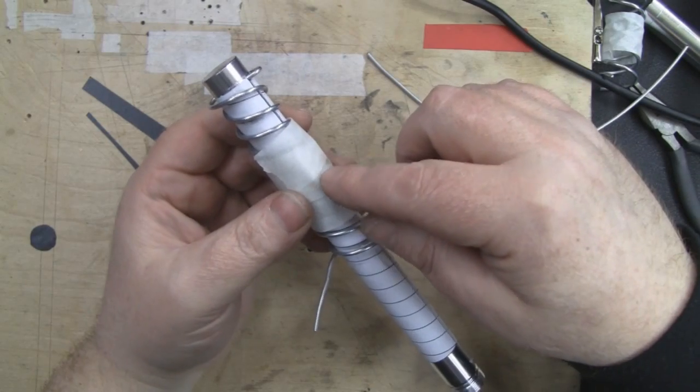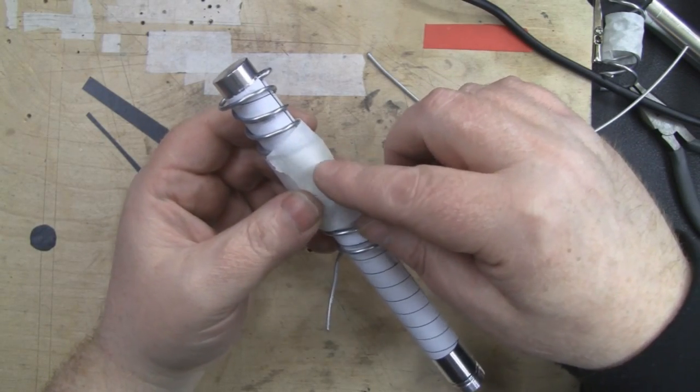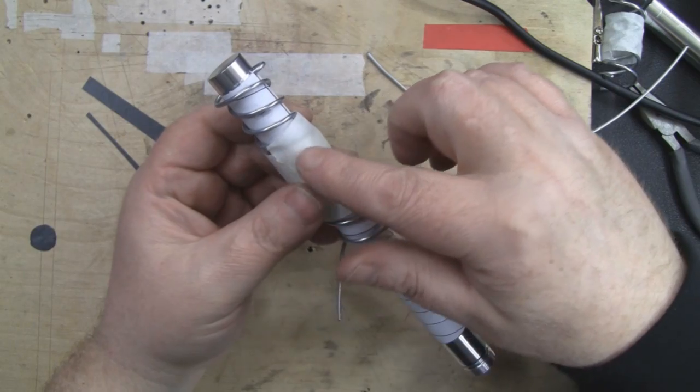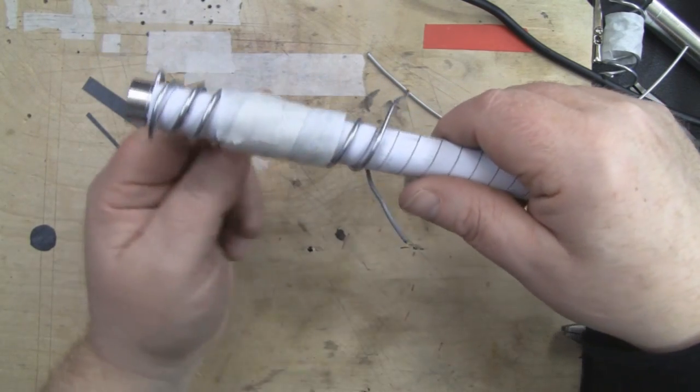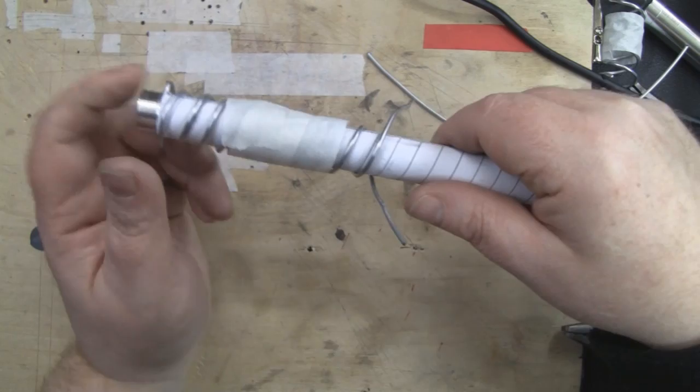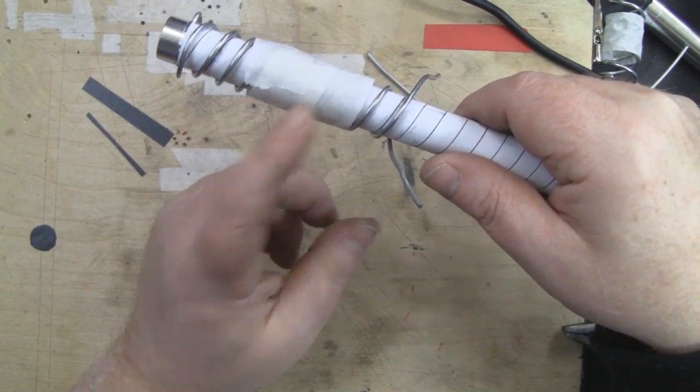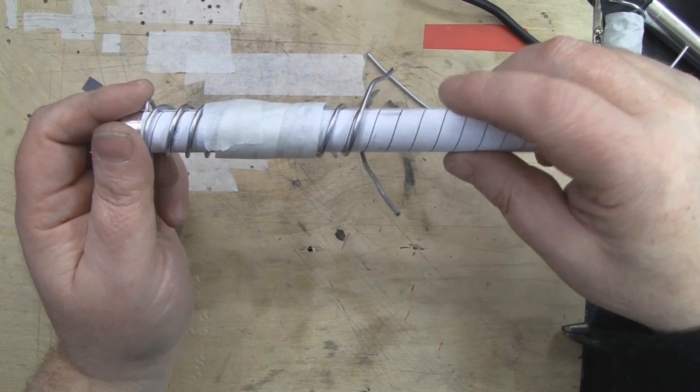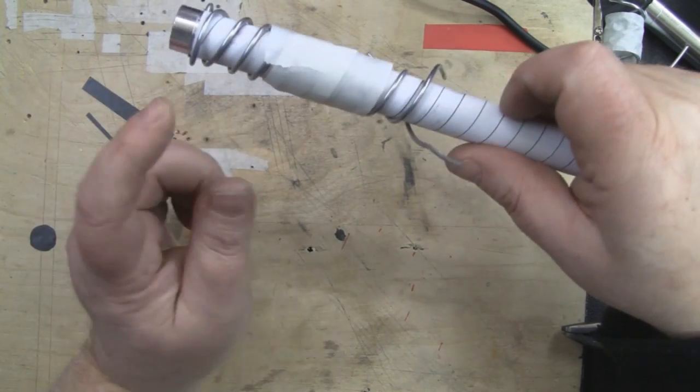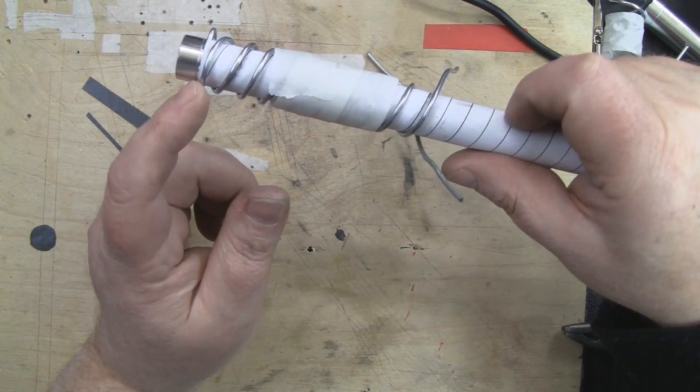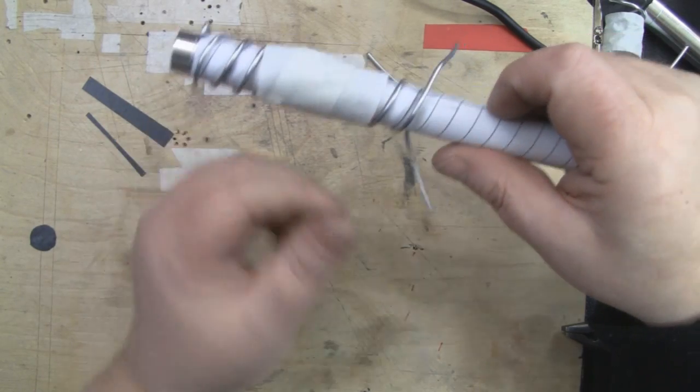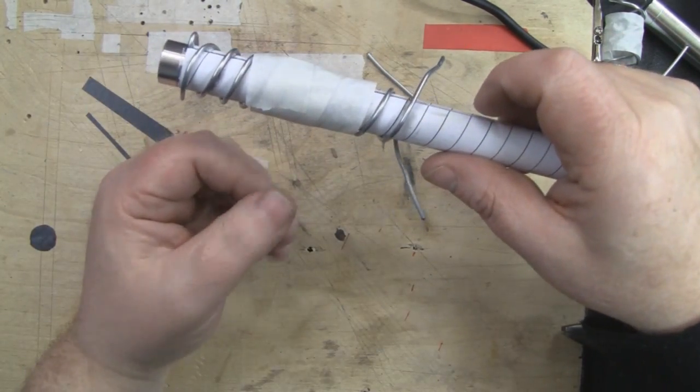Once you're happy that the coils are spaced out nice and even, get some masking tape and just lightly wrap it around the center of these coils, just so it's holding the wires so they can't move but it's not sticking down onto the template on the tube. What I'm going to do now is cut it away from these two loops so we can slide it all off.